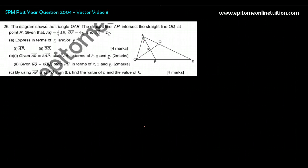The diagram shows triangle AOB, and the straight line AP intersects the line AQ at point R. AQ is 1/4 AB. So what I'm going to do is read the question and label the diagram. It is always easy if you label them correctly before you start.